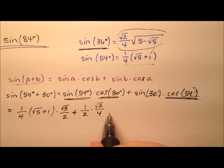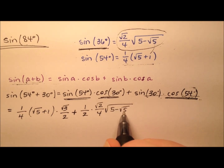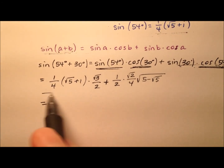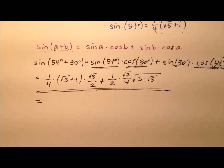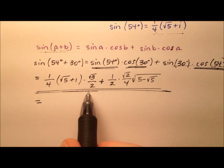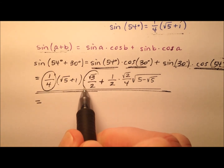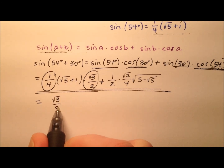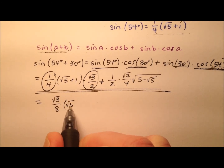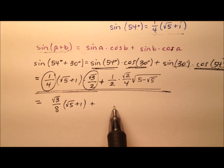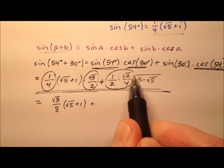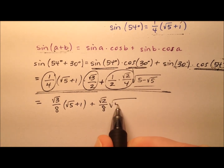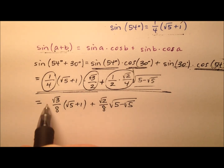So we use the square root of 2 over 4 multiplied by the radical expression for sine of 36. Combining the fractions, we get the square root of 3 over 8 multiplied by the square root of 5 plus 1, plus the square root of 2 over 8 multiplied by that radical expression.